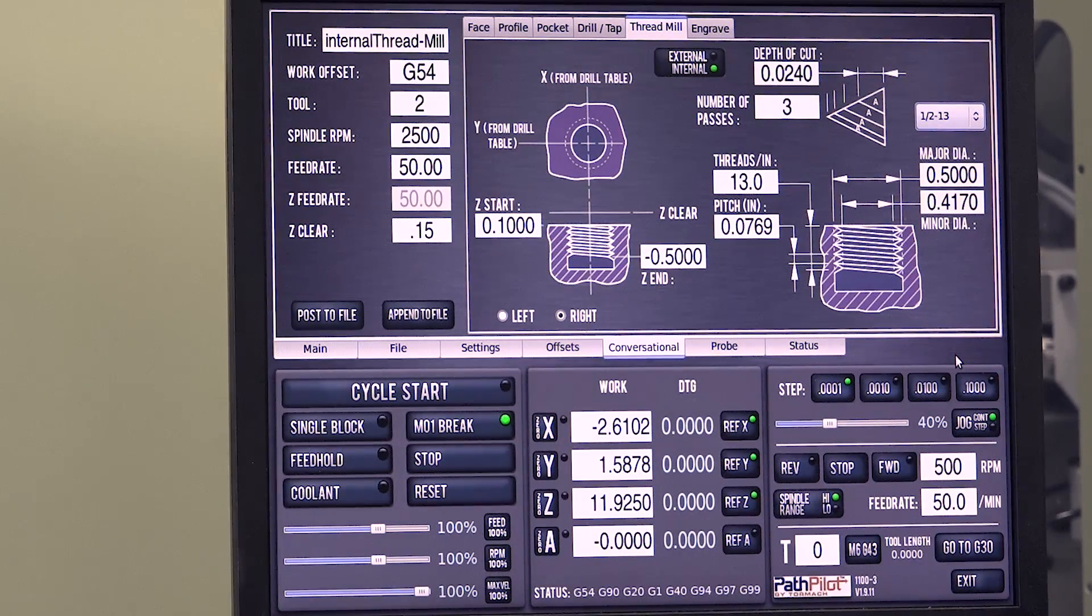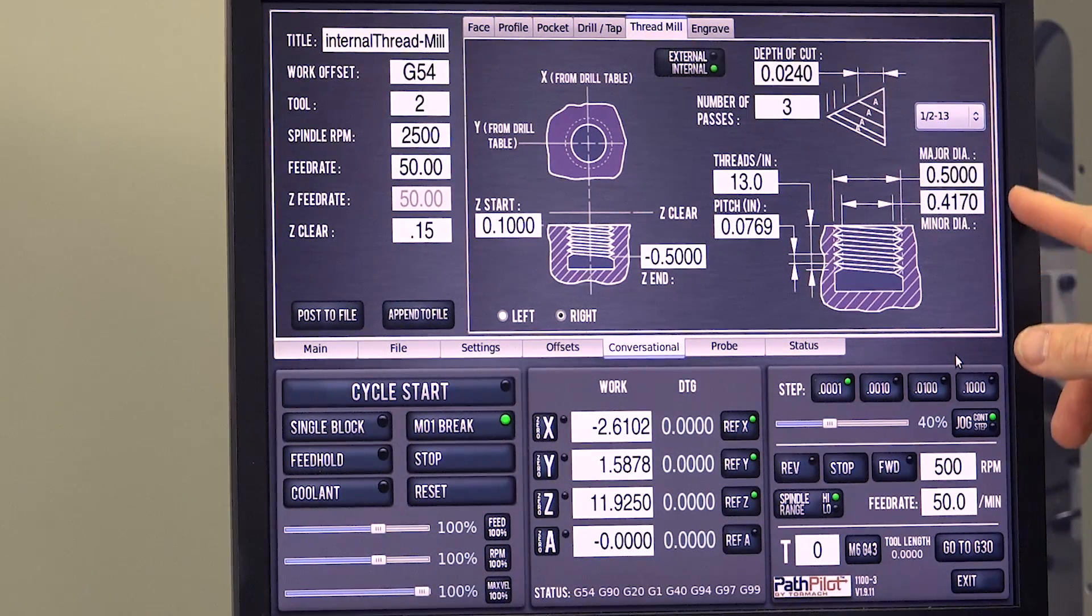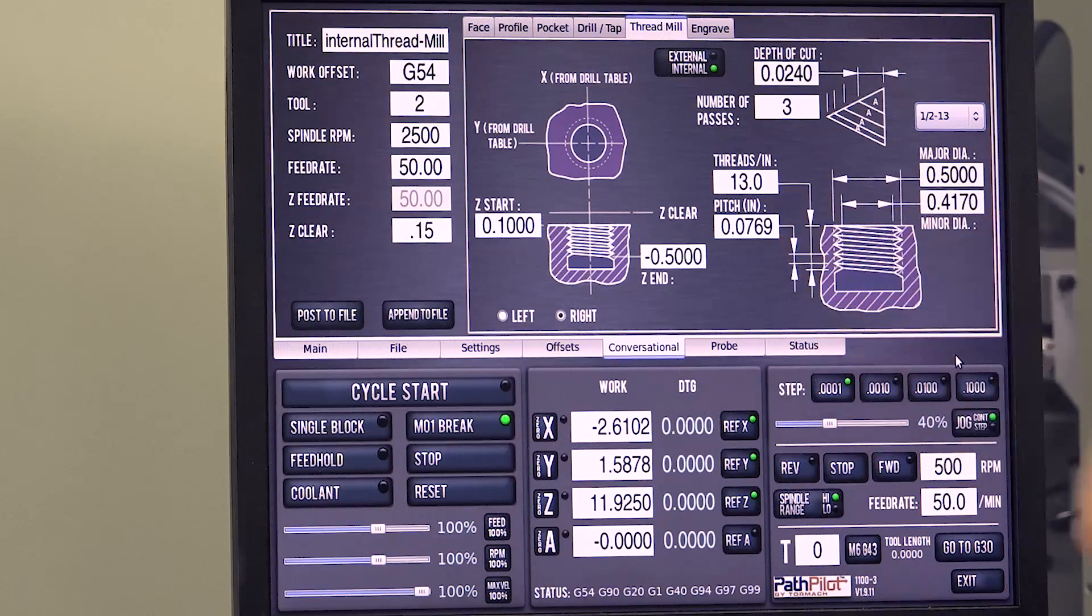I should point out we're in G20, which is imperial units. If we were in G21, that table there would have shown metric threads. But we can select that half 13, and that'll pop in the major diameter, the minor diameter, the threads per inch, and the pitch for us.